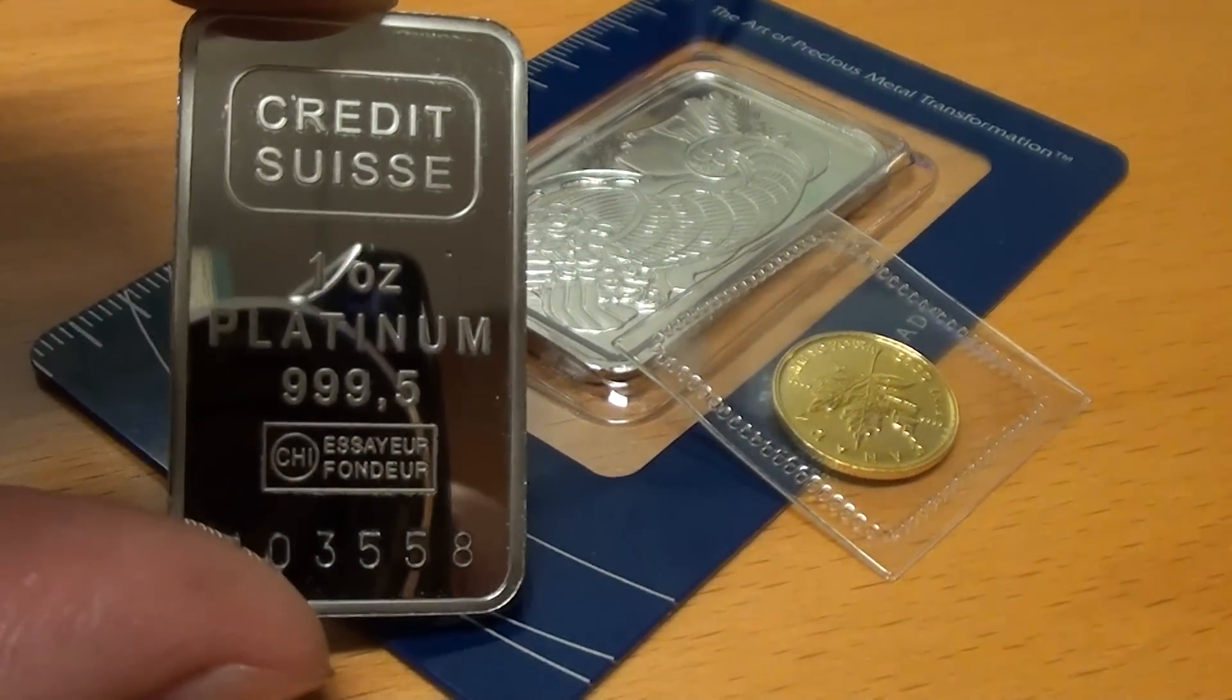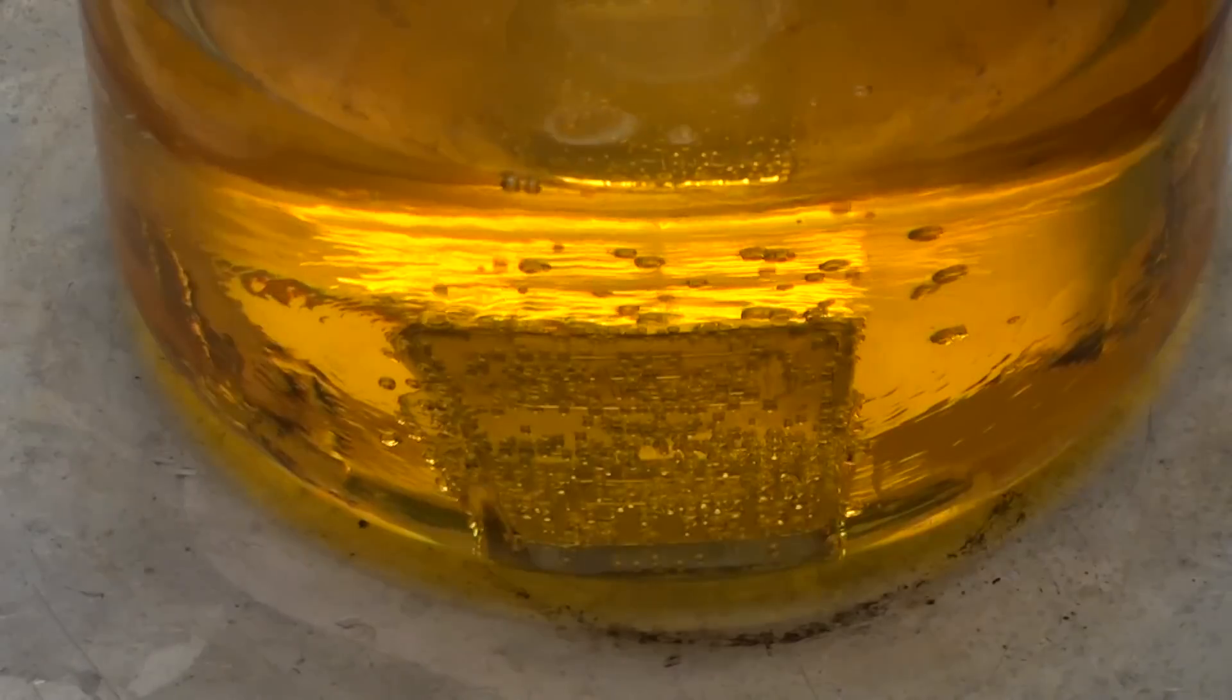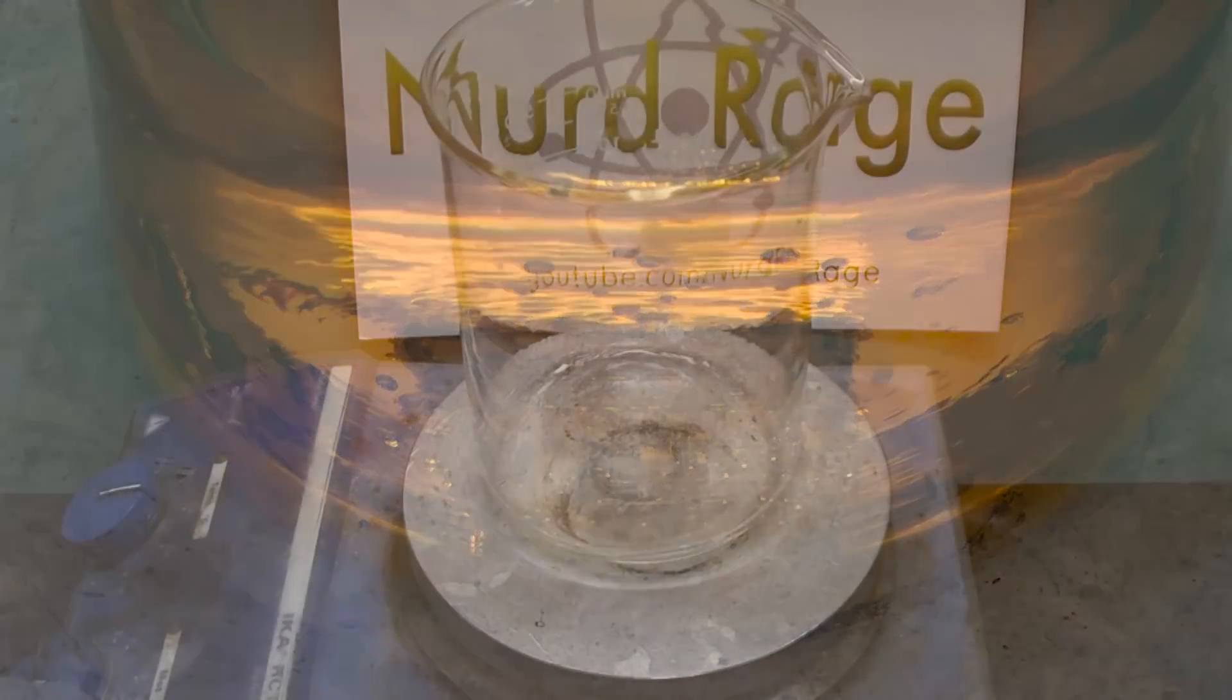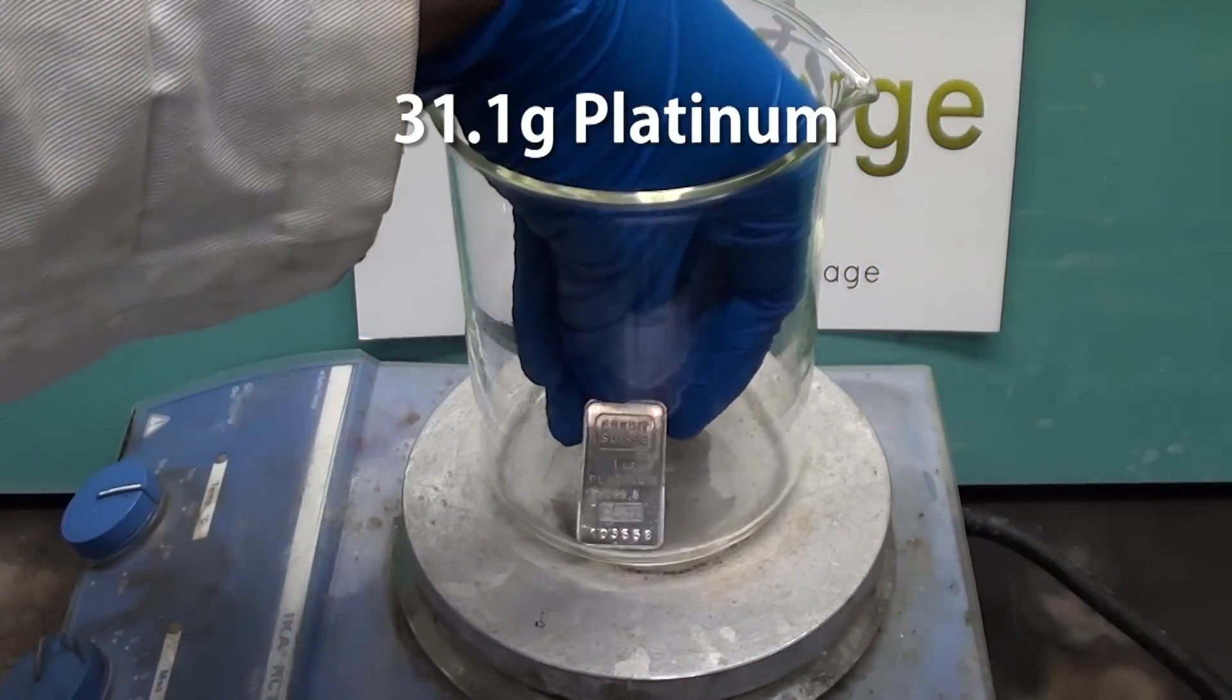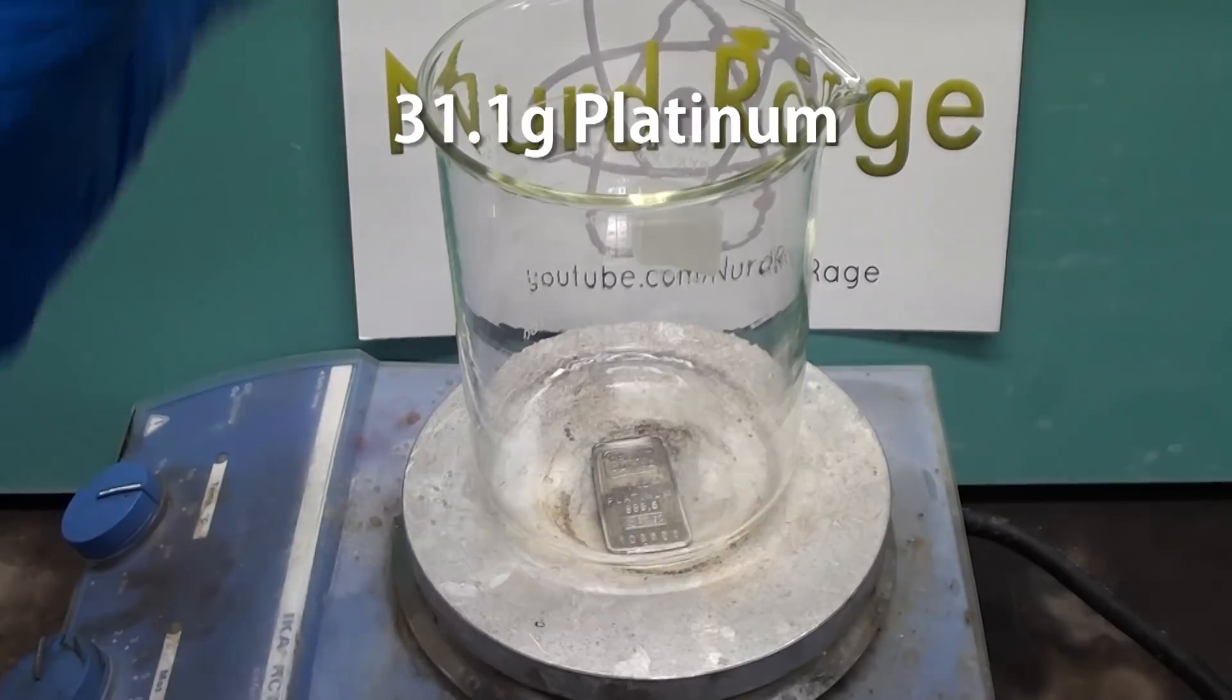In this video we're going to dissolve platinum in a combination of nitric and hydrochloric acids, better known as aqua regia. Here is the platinum bar weighing one troy ounce or 31.1 grams.